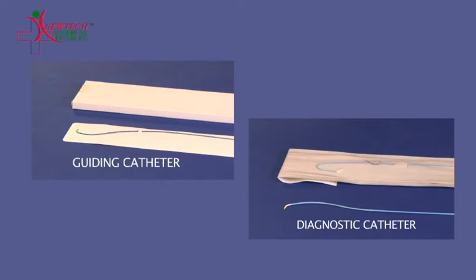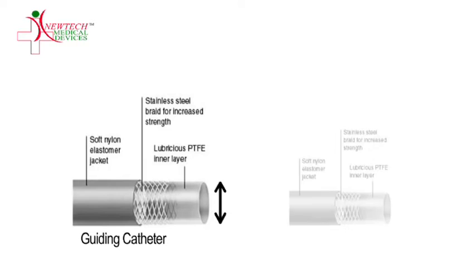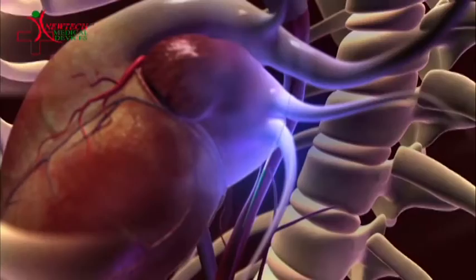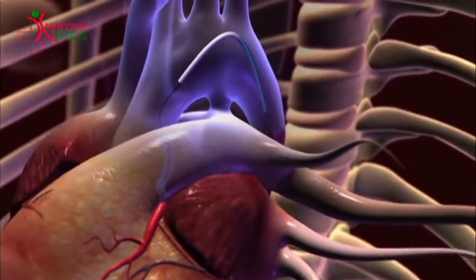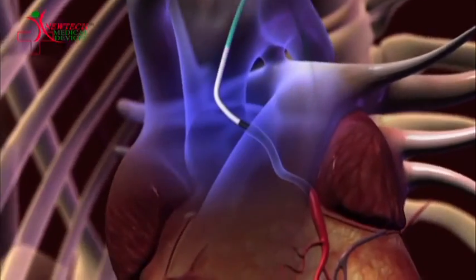Guiding catheters and diagnostic catheters look almost the same. The only difference is that the inner bore of a guiding catheter is bigger compared to that of a diagnostic catheter, as a guiding catheter has to deliver heavier devices like balloons and stents into the coronary artery.